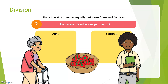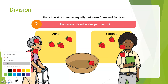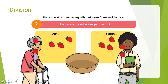Share the strawberries equally between Anne and Sanjeev. How many strawberries per person? One, two, three, four, five strawberries for Anne. One, two, three, four, five strawberries for Sanjeev too. Each one got five strawberries.